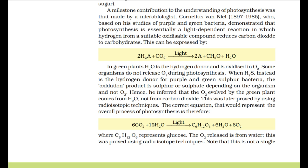A milestone contribution was made by microbiologist Cornelius Van Niel (1897–1985), who, based on studies of purple and green bacteria, demonstrated that photosynthesis is essentially a light-dependent reaction in which hydrogen from a suitable oxidizable compound reduces carbon dioxide to carbohydrates. This can be expressed as: 2H2A + CO2 → 2A + CH2O + H2O. In green plants, H2O is the hydrogen donor and is oxidized to O2.